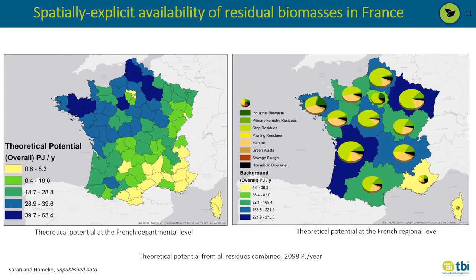The combined potential from all streams at the French departmental level varied from about 0.6 PJ per year to about 63.4 PJ per year, and at the regional level from about 4.8 PJ per year to about 276 PJ per year. The pie charts represent the share of different residual streams for each region. The Grand Est region in the far east had a larger share of crop residues, whereas the Bretagne region in the far west had a larger share of manure, because a large number of animal farms are located in Brittany. The overall theoretical potential from all residues combined was about 2100 PJ per year.